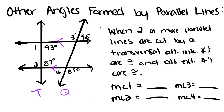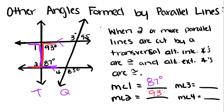If you remember what an alternate interior angle is, it's those angles that when you pair them up, they form a Z. They're alternate because they alternate what side and what part of the line they're on, and now we know that they're congruent. So I can say that the measure of angle 1 is 87. I can do the same thing with alternate interior angles with angle 2 and this angle, so angle 2 is 93 degrees.